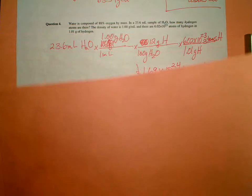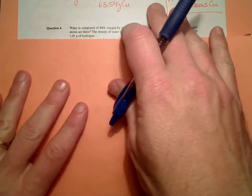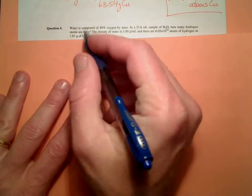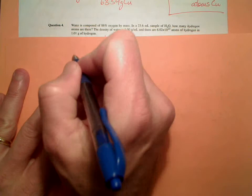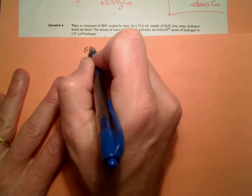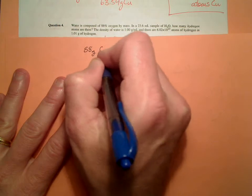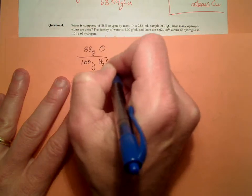Okay, so let's look to see what we have so far. So we know we have what? It's 88% oxygen by mass, so we know that there are 88 grams of oxygen for every 100 grams of water. So we know we have that. That's a conversion factor.